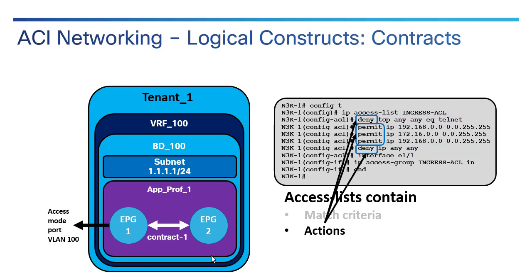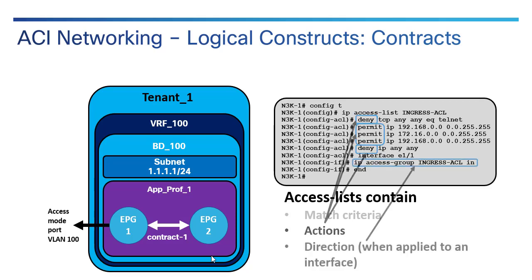Once you've matched, you choose actions. The most common are permit and deny, but there are others as well, including the log keyword. And then finally there's a direction — you apply this as a packet filter on an interface and it'll either be inbound or outbound, or you can apply the same one both ways. So think about match criteria, actions, and direction.